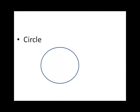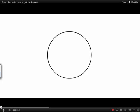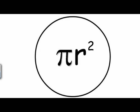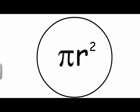Next up, we've got the circle. Check this out. Pi r squared gives you the area of a circle. But where does pi r squared come from?